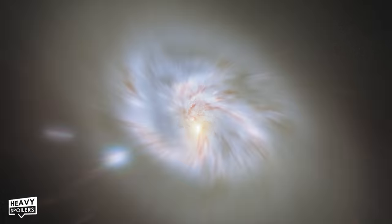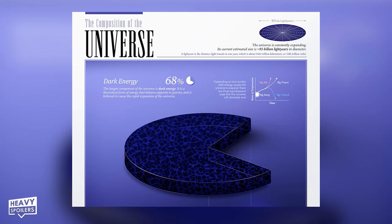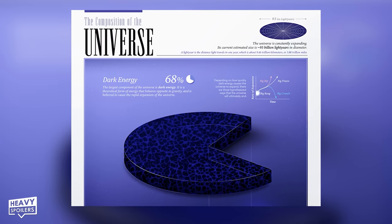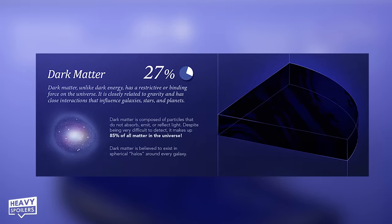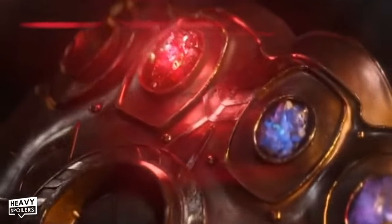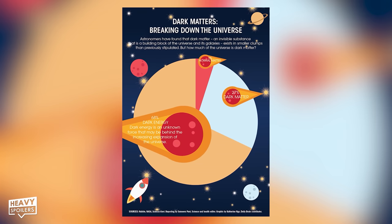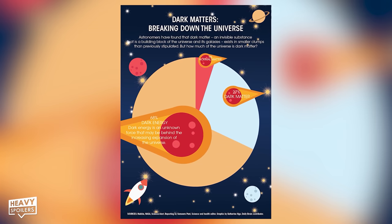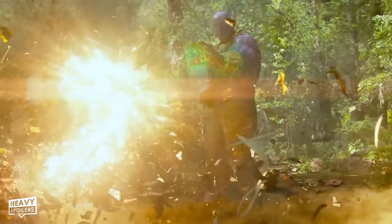Our universe is mainly made up of three main elements: 68% being dark energy, which the MCU represents as blue; 27% of the universe being dark matter, which the MCU represents as the red Ether Infinity Stone, chaos magic, and black vibranium; with less than 5% of the universe being normal matter that human beings can see and interact with, which the MCU represents with the yellow quantum energy of the mind stone singularity.